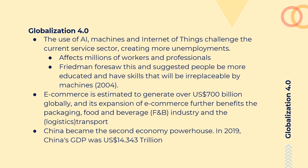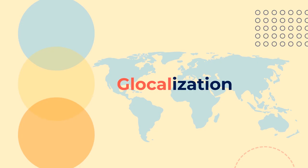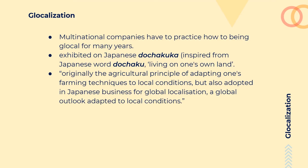Glocalization may be a new term for many people, but it is not a new phenomenon. The word 'glocal' was modeled from the Japanese word 'dochakuka.' It was originally meant as the agricultural principle of adapting one's farming technique to local conditions, but it was also adopted in Japanese business, combining both global and localization. A global outlook adopted to local conditions. The terms 'glocal' and 'glocalization' became popular during the 1980s, primarily in the business sector.